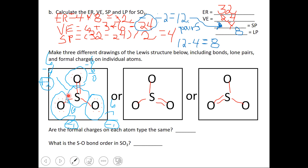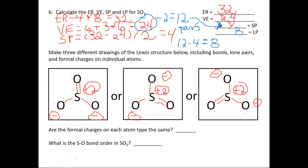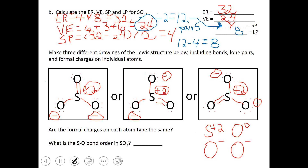Any time I have a single bond between sulfur and oxygen, I'll give it 3 lone pairs and a minus 1 formal charge. Any time I have a double bond to oxygen, I'll give it 2 lone pairs and a 0 formal charge. The sulfur in all of these structures has 4 bonds, so it will always have a plus 2 formal charge. So in each structure, our sulfur is plus 2, we have 1 oxygen at 0 formal charge, and 2 oxygens at minus 1 formal charge.